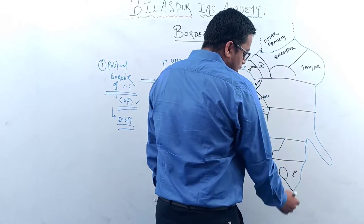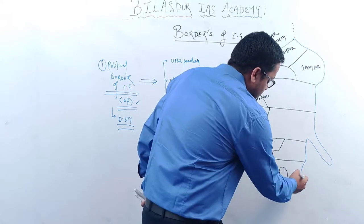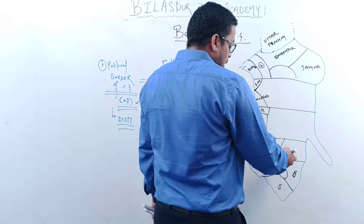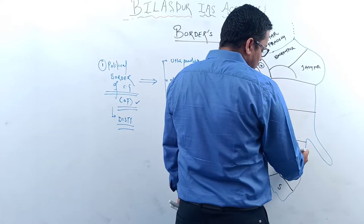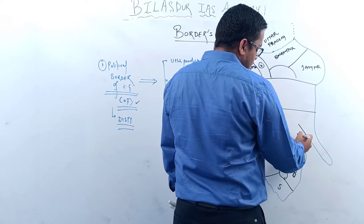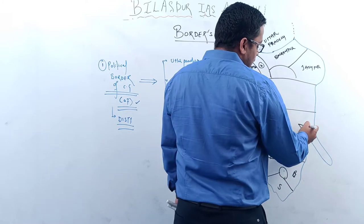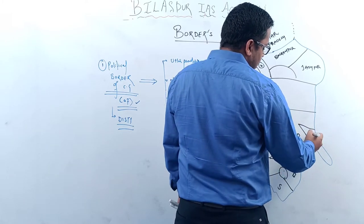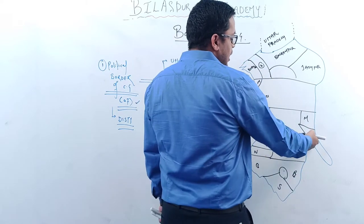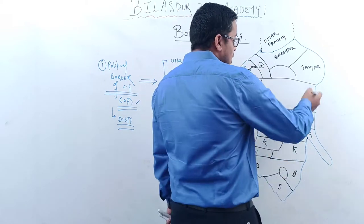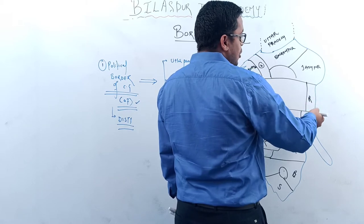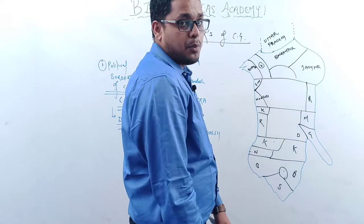Bastar will also make the border. Dantewada will not make the border, while Kondagaon will make the border. Here we have Dhamtari and Gariyabandh making the border, and Mahasamund making the border. Raigarh will also make the border, and Jaspur makes the border.